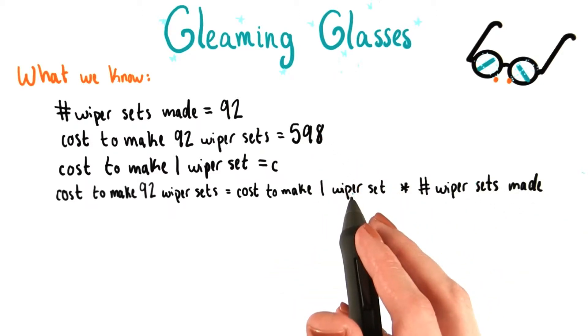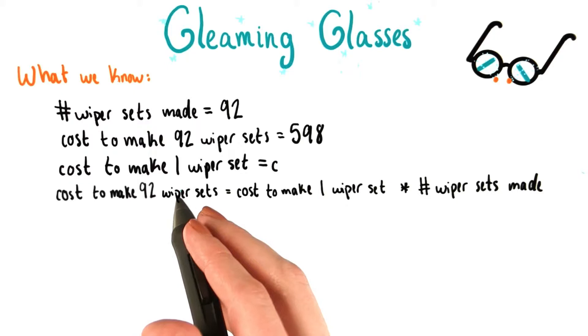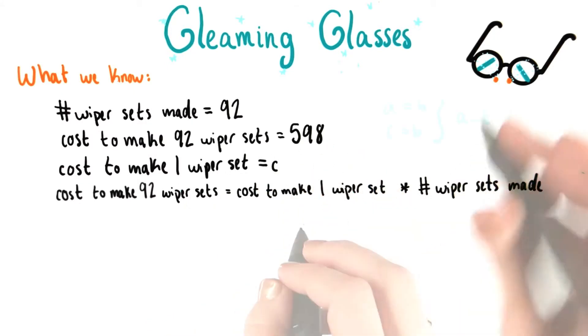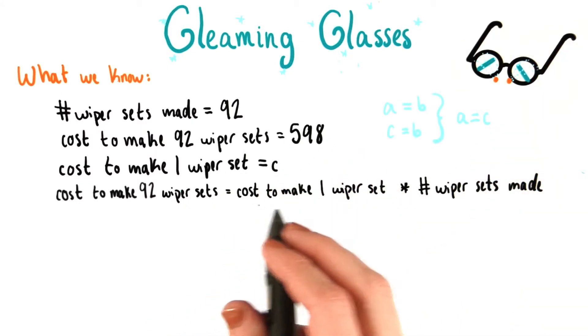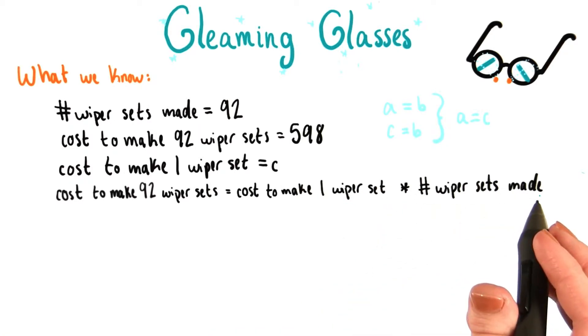Now, when two quantities are both equal to the same thing, that means they're also equal to each other. That means we can say that 598 equals the cost to make 1 wiper set times the number of wiper sets made.